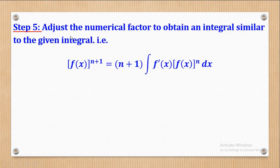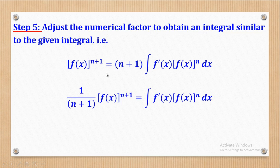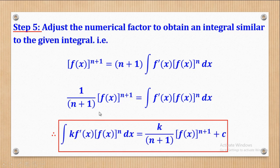Step five is to adjust the numerical factor to obtain the integral similar to the given integral. We remove the constant and take it to the other side. Comparing with the given integral, which had k as the constant, we multiply both sides by k to obtain the required integral. This gives k over (n plus one) multiplied by f(x) raised to the power n plus one — and don't forget the constant of integration. This is the formula used each time you recognize a function and its derivative.